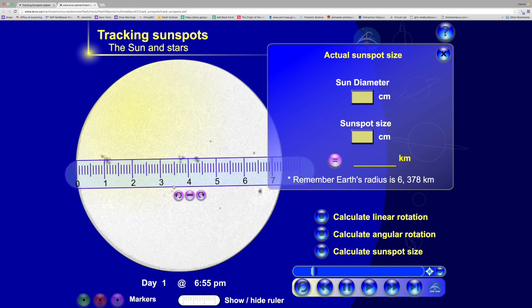We're going to compare the size of a sunspot to the Earth's radius. We know that the Earth's radius is 6,378 kilometers. How does the size of a sunspot compare to that?